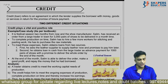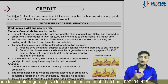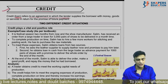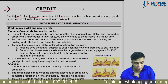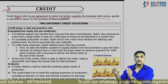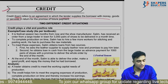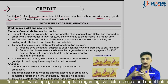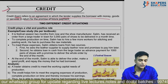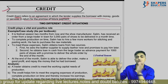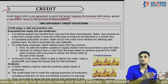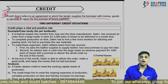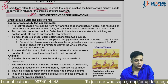Now let us look at credit. Credit refers to an agreement in which the lender supplies the borrower with money, goods, or services — in return for the promise of future payment. The lender gives money as a loan and expects the borrower to repay it in the future with interest. This is the definition of credit.